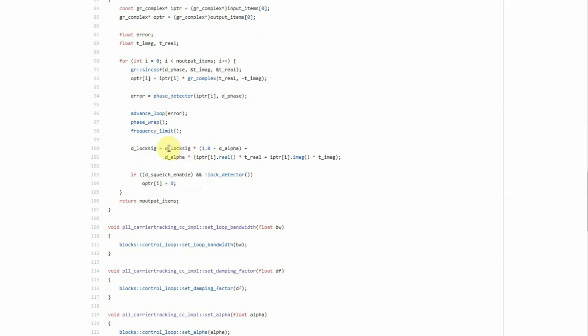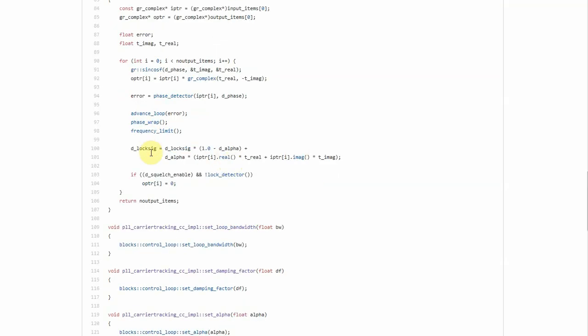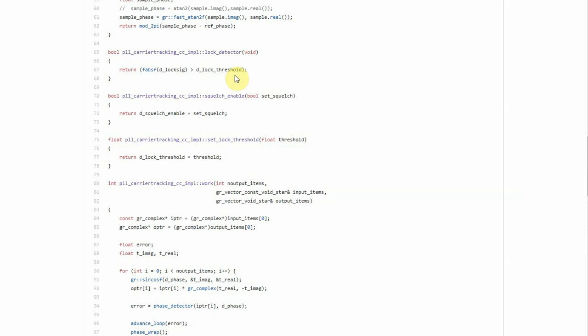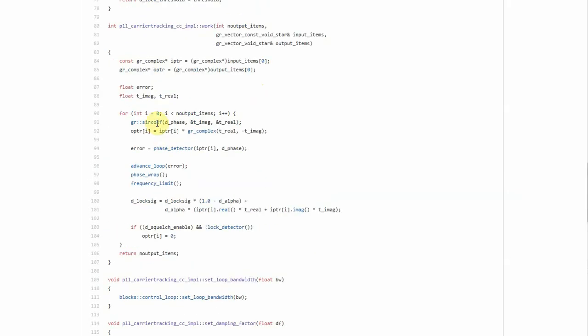Now this is a lock signal where it is taking the i times i plus q times q part. So basically the real part of this operation. And scaling it by a factor alpha. The previous value is scaled by one minus alpha. So it sort of keeps a weighted running sum. When this value becomes bigger than some certain threshold as set in the lock detector, lock signal is enabled.